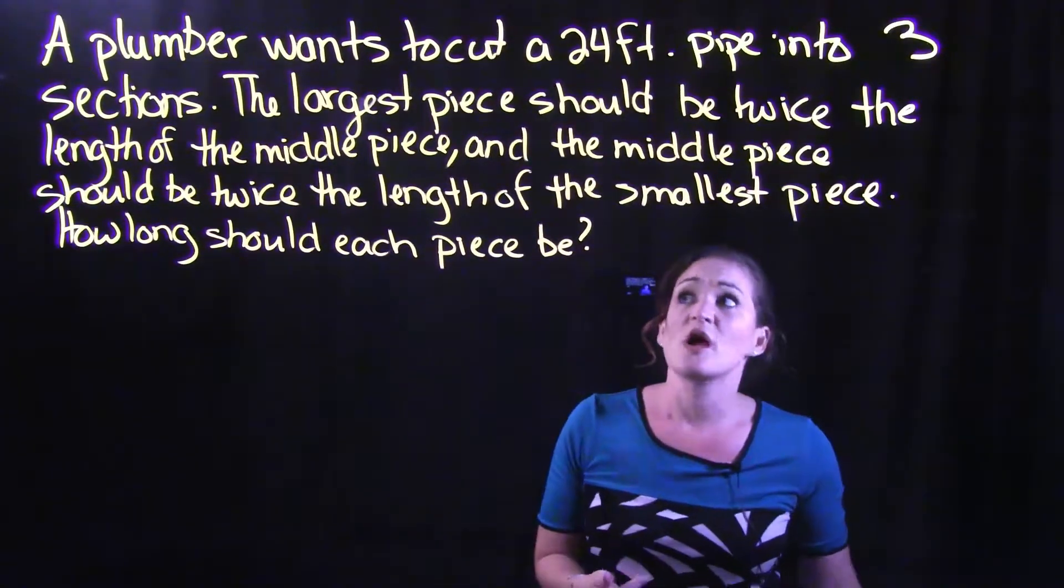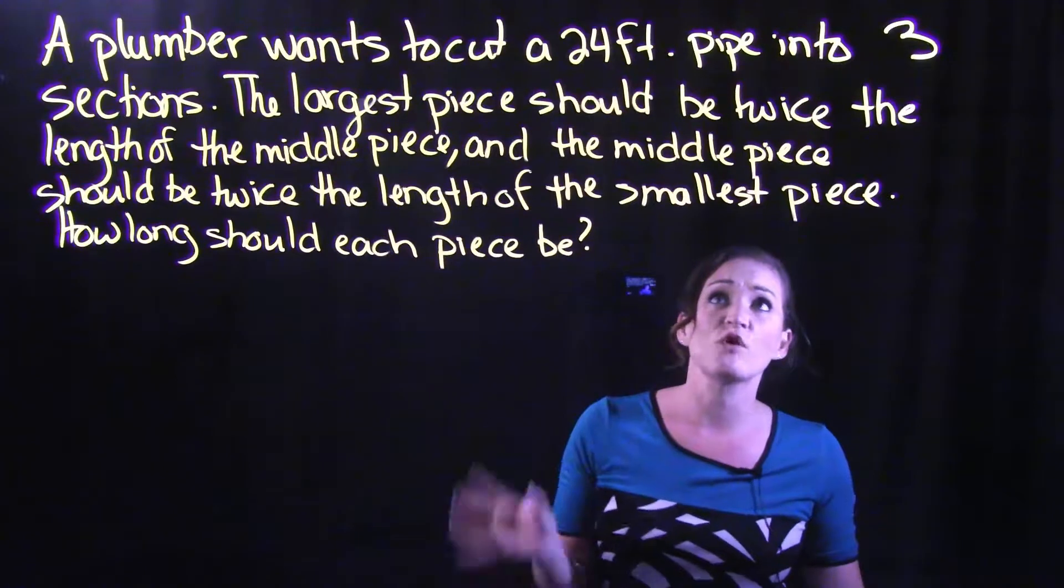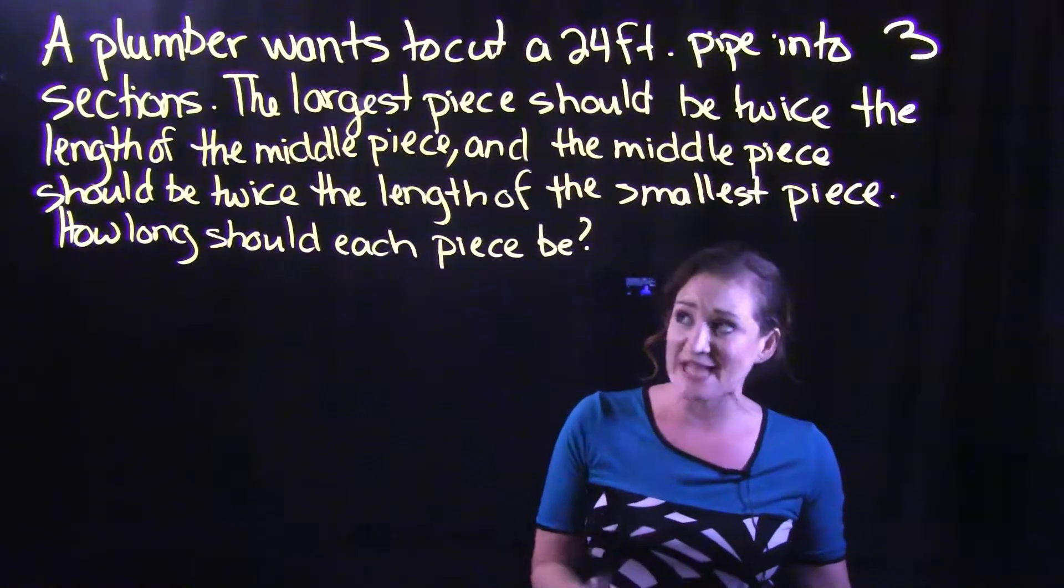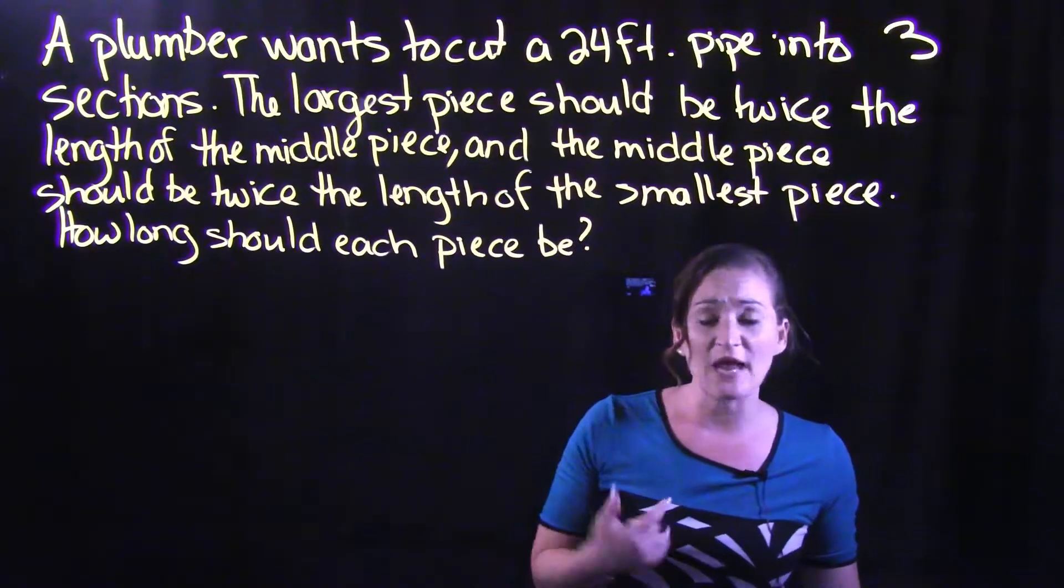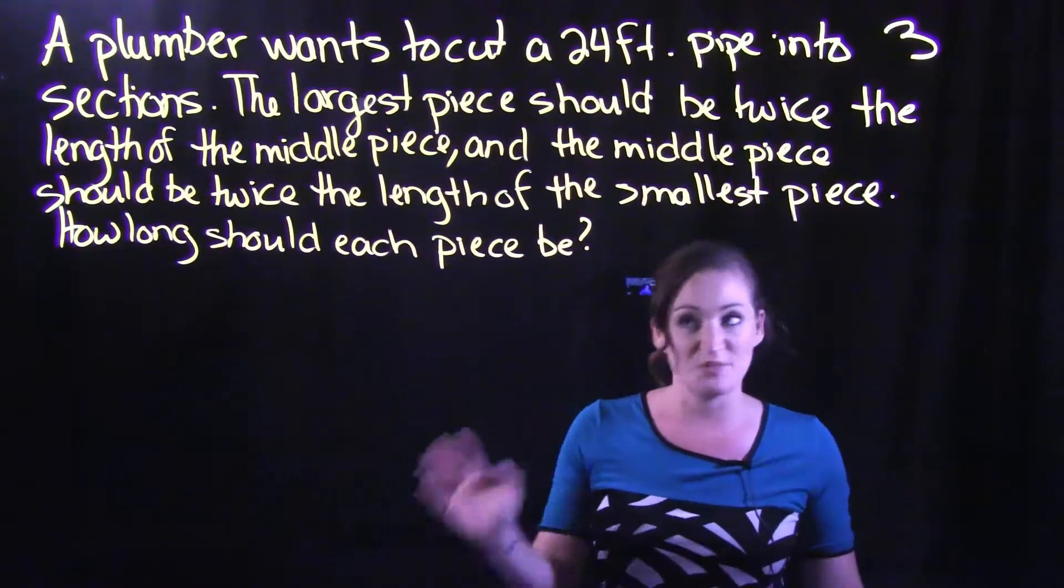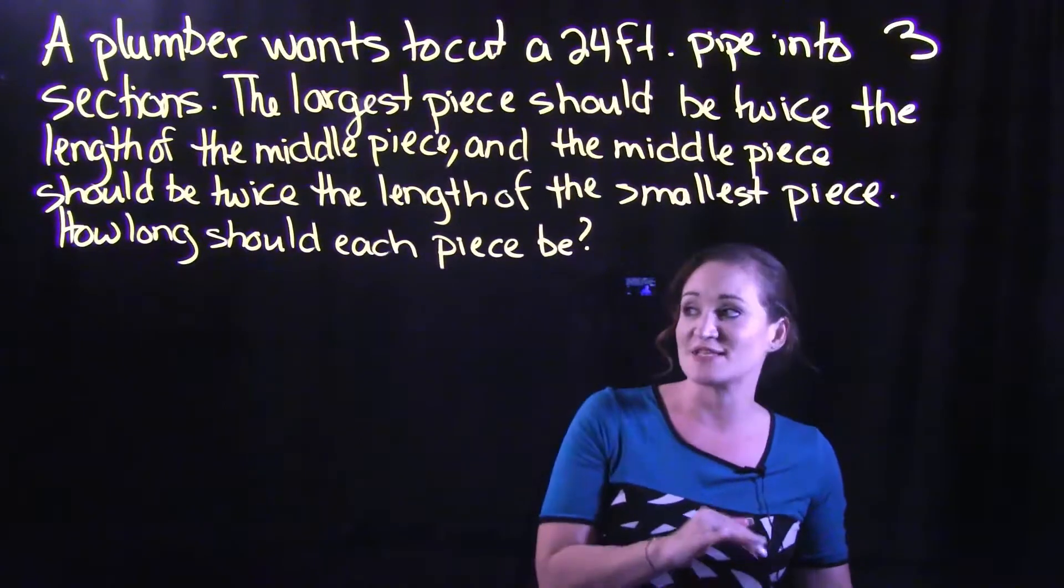Let's read through this situation. We have a plumber that wants to cut a 24-foot pipe into three sections. The largest piece should be twice the length of the middle piece, and the middle piece should be twice the length of the smallest piece.